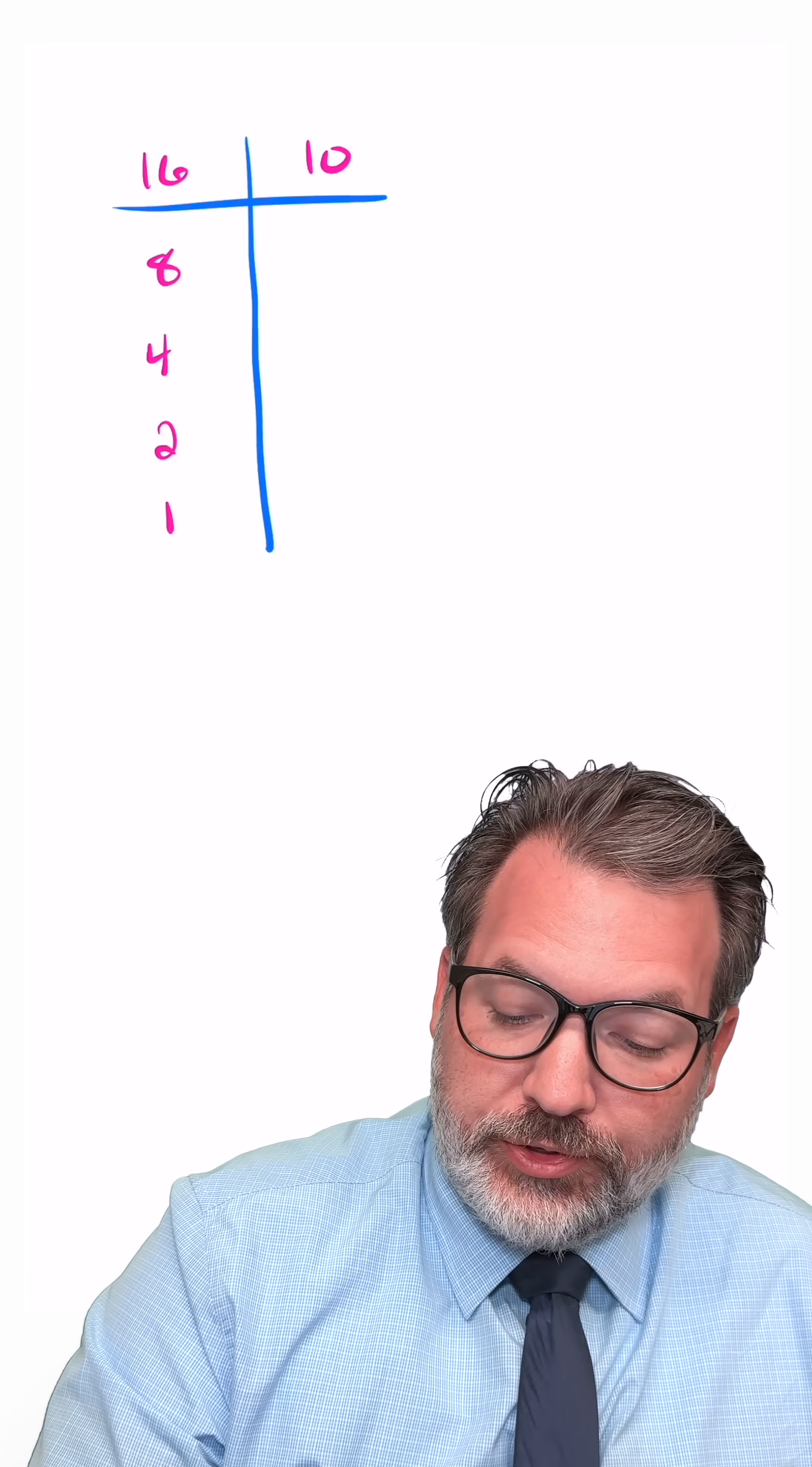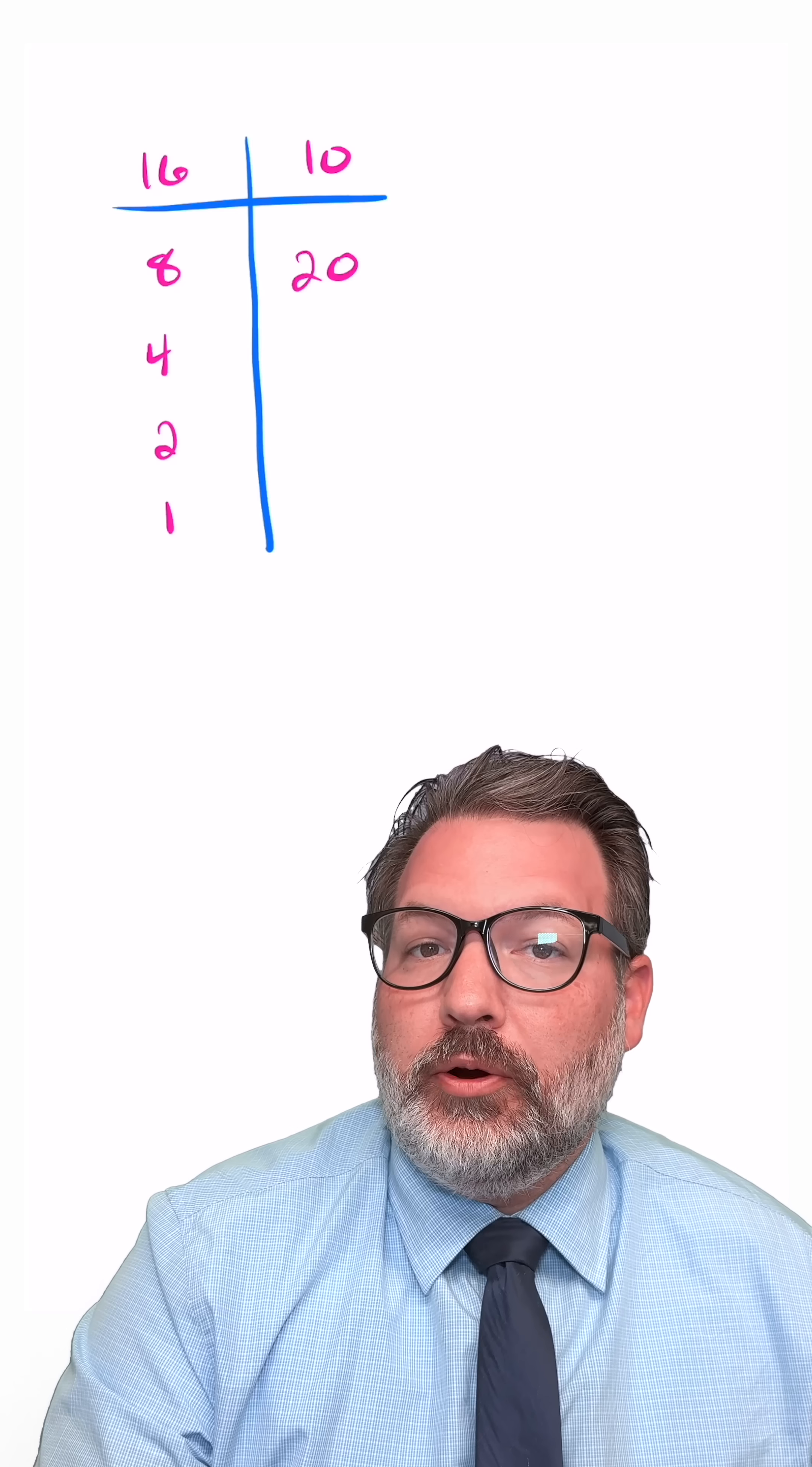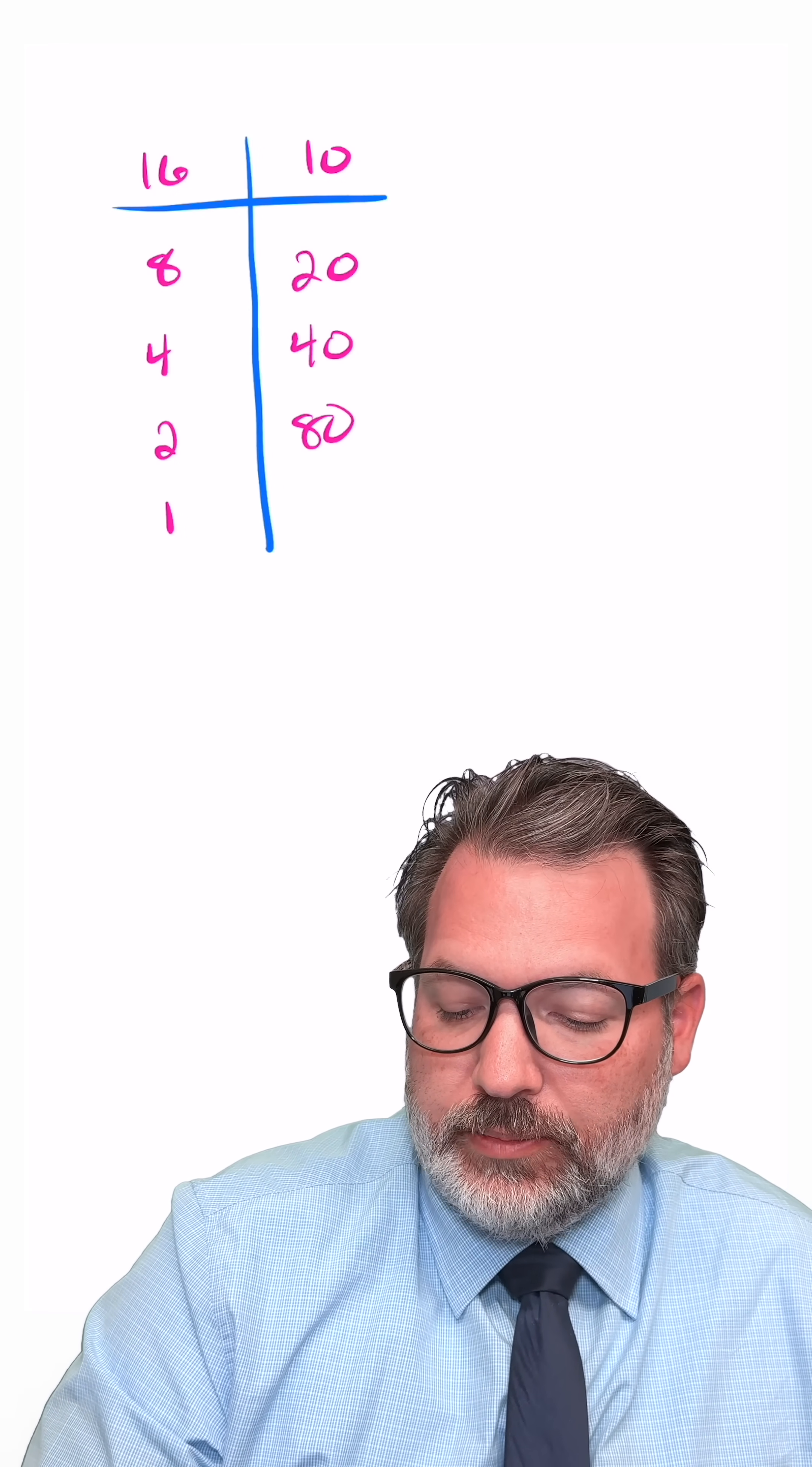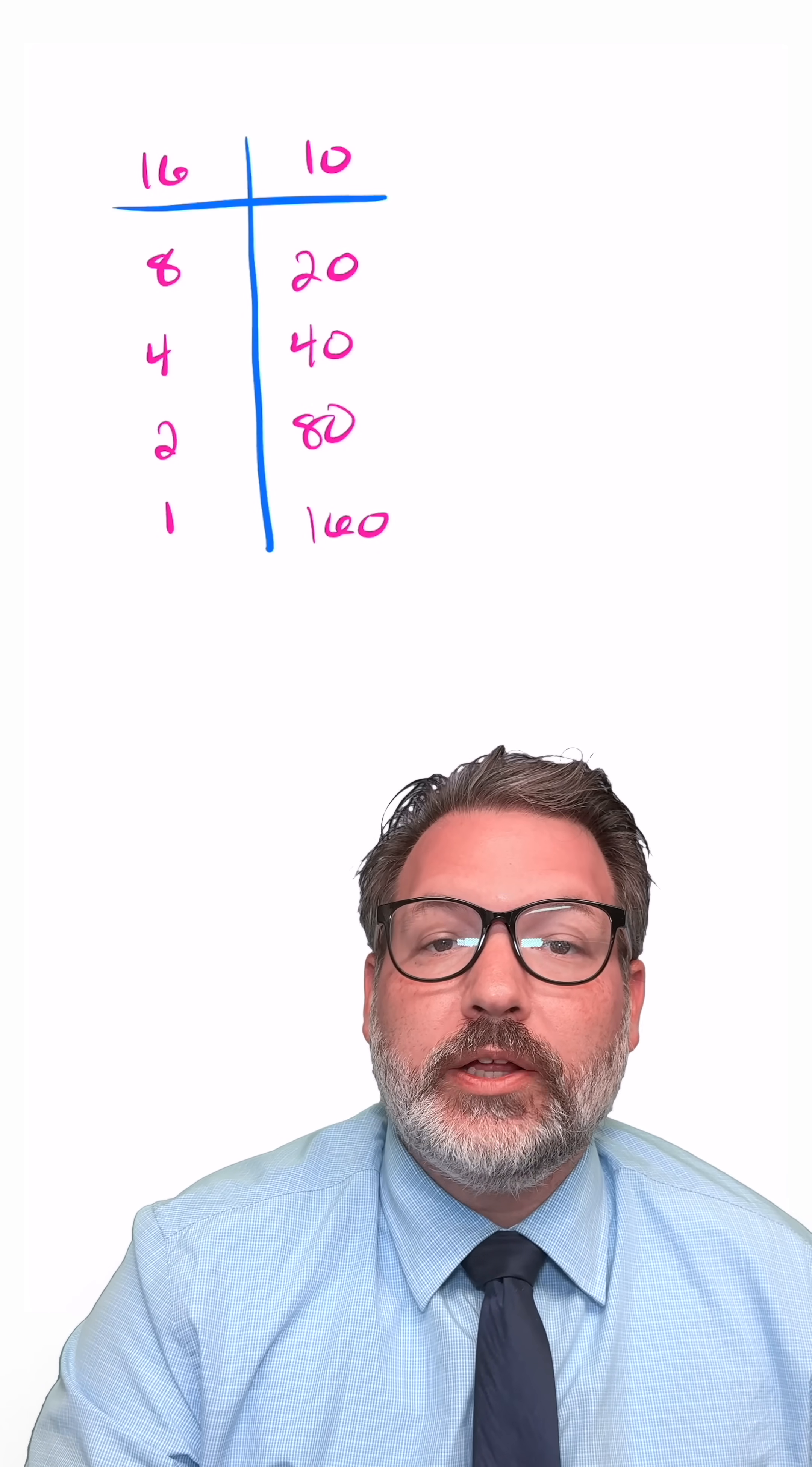On the right side of the table we do the opposite. We're going to double over and over again. So 10 times 2 is 20 times 2 is 40 times 2 is 80 times 2 is 160.